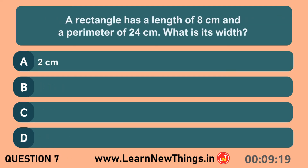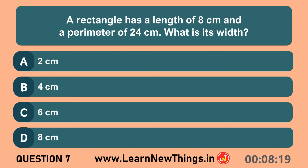A rectangle has a length of 8 centimeters and a perimeter of 24 centimeters. What is its width? 4 centimeters.